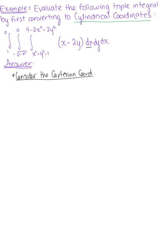Our first differential is z, so we can say that z is greater than or equal to x² + y² − 1, and less than or equal to 4 − 2x² − 2y². Our second differential is y, so we can say that y is greater than or equal to minus the square root of 1 − x², and less than or equal to 0.